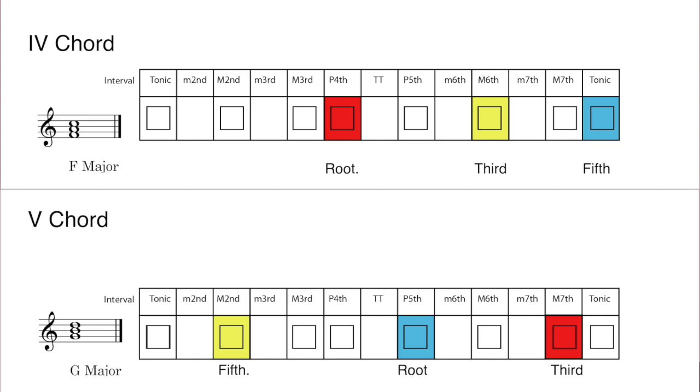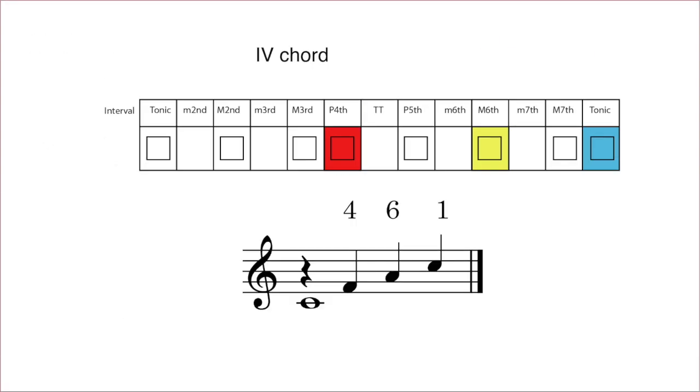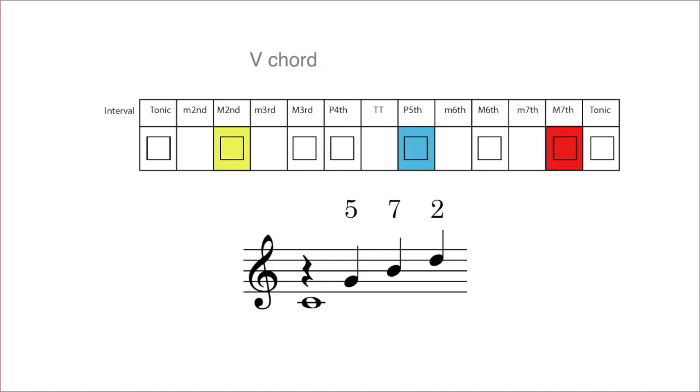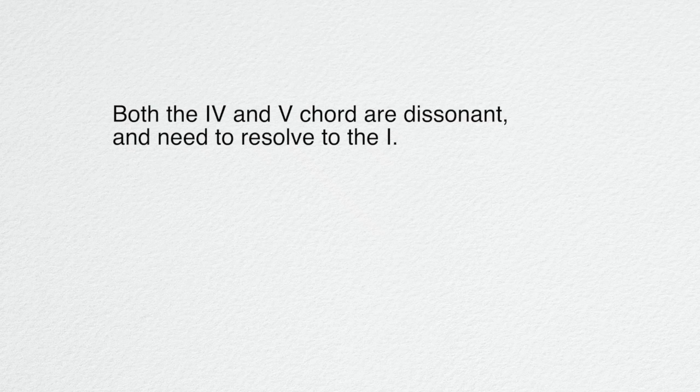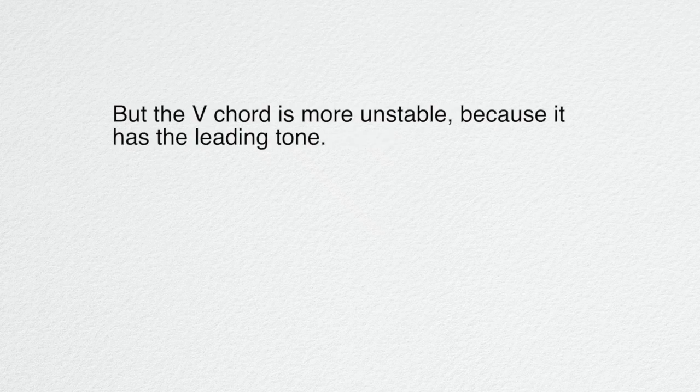If we examine the other two major chords in the scale, the four and the five, we see that they each have one stable tone, one unstable tone, and one very unstable tone. This means that they both have a tendency to need to resolve to the one. But of the two, the five is more unstable since it has the most unstable note, the seventh scale degree.